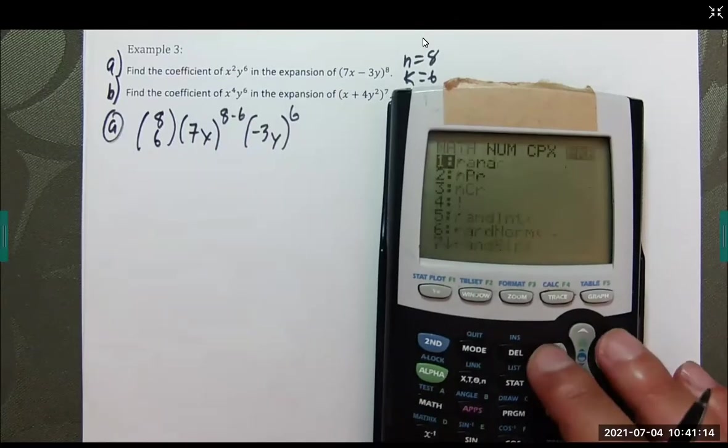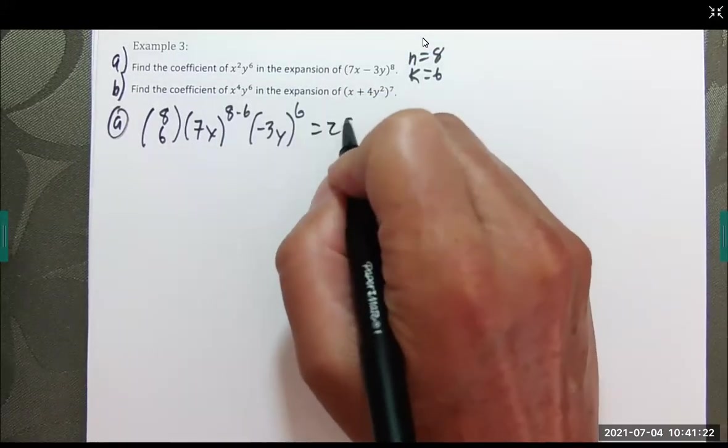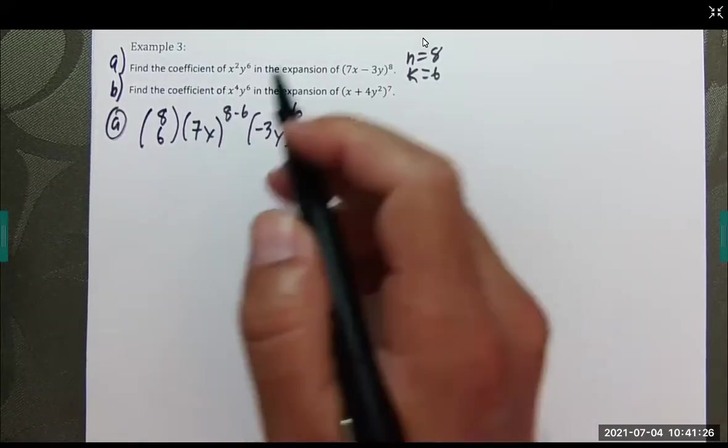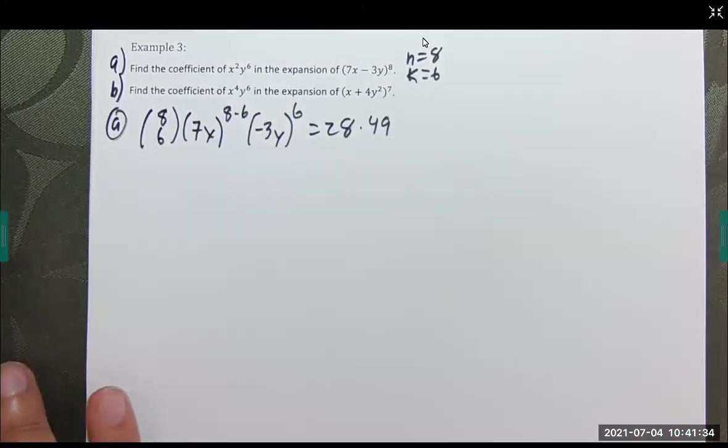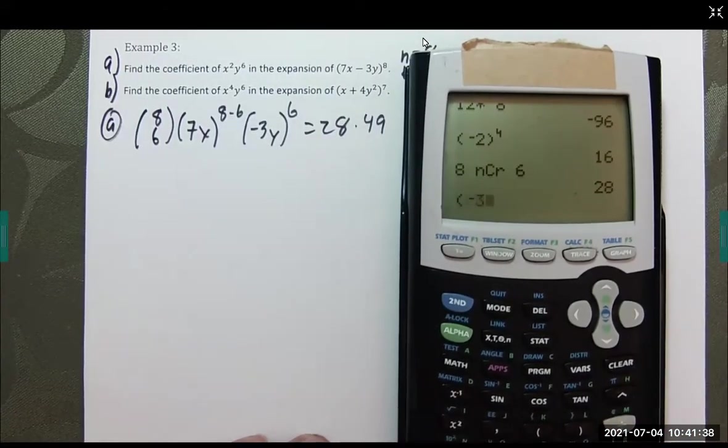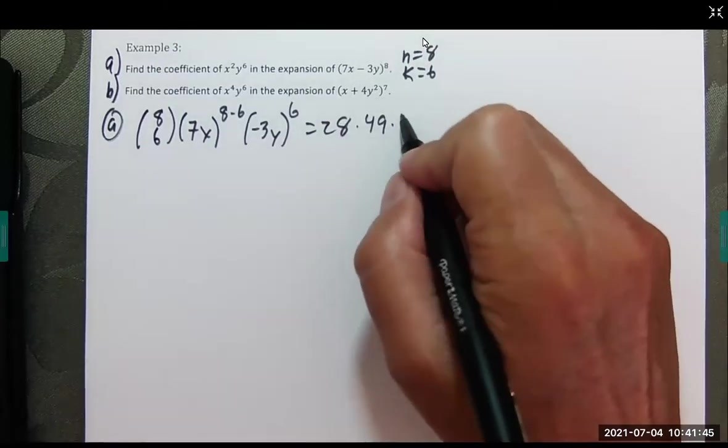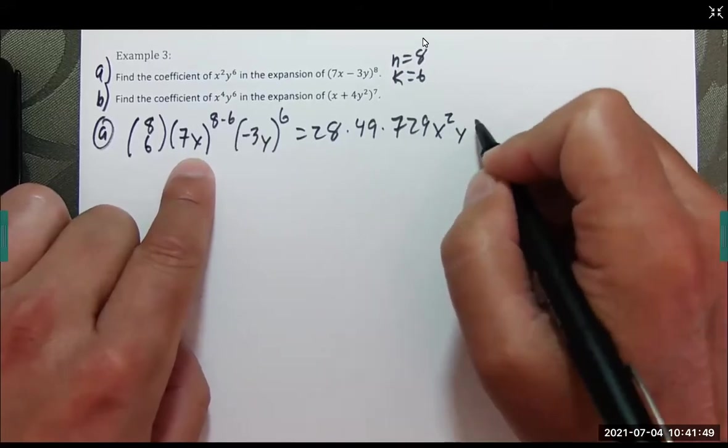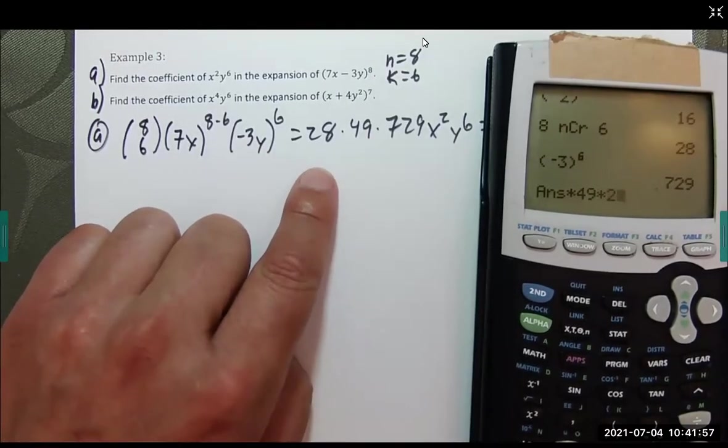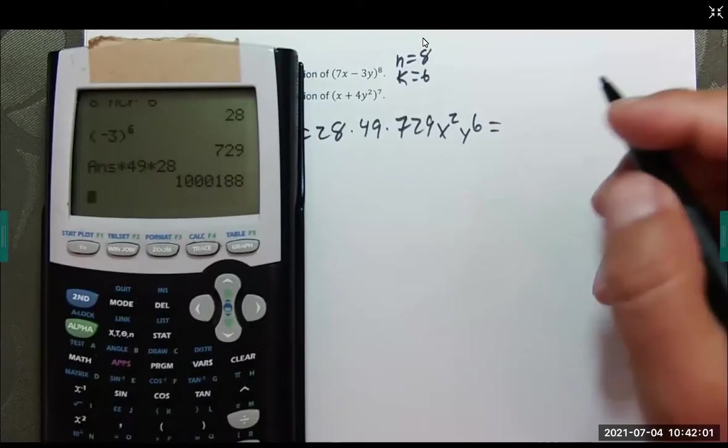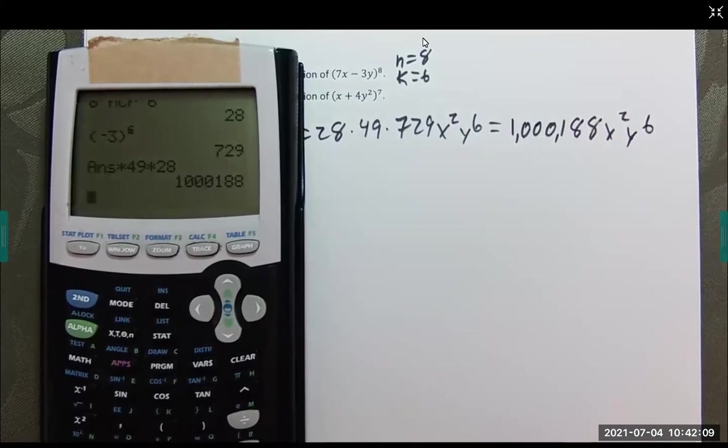So, let's start with 8 choose 6, 28. Let's write that down. This is going to be 7 squared. You can see this is the second power. So, 7 squared is 49. And, then we have negative 3 to the sixth power. I have no idea what that is. So, negative 3 to the 6th power, so positive 729. And, that is now x to the second power y to the sixth power. So, let's multiply all that out, 729 times 49 times 28. It's a big number. 1,000,188, x squared y to the sixth. So, our coefficient of interest is 1,000,188.